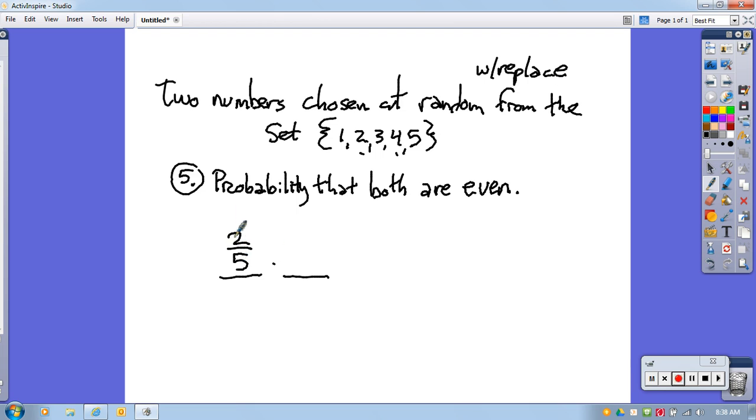And now for our second choice, assume that we got an even. So now there's only one even left, and there's only four things to choose from. And then we can just multiply. This is the same as 2 20ths, which is the same as 1 10th.